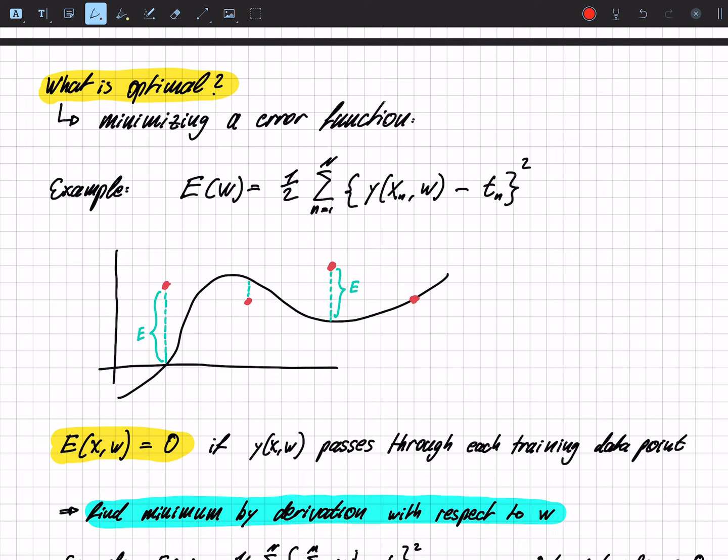So here we have just for example a random error function that will come in handy later. So if we just look at the function, you see that this is our function that we think might be our actual graph or function that we want to find. And this is the corresponding target vector.